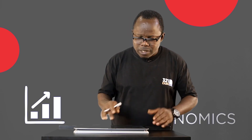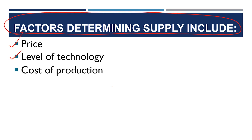The third factor is cost of production. When the cost of production is low, the supply of goods and services will be high. But when the cost of production is high, the supply of goods and services will be low, because cost of production is a predominant factor that affects supply.